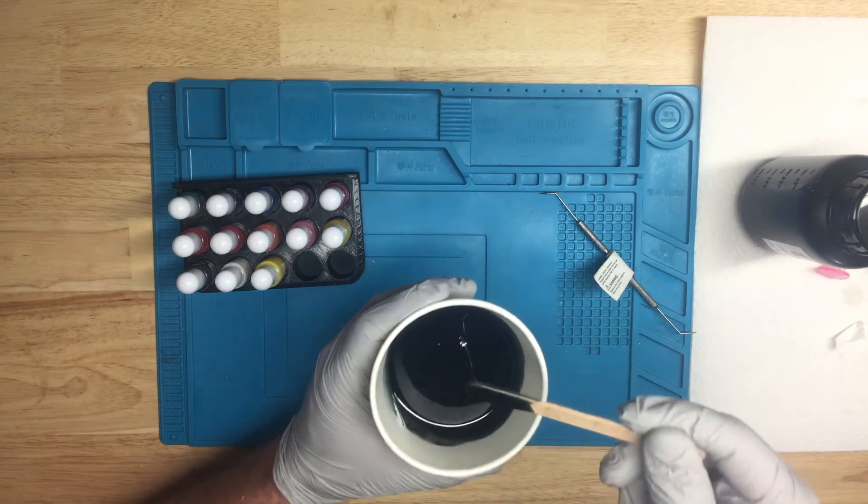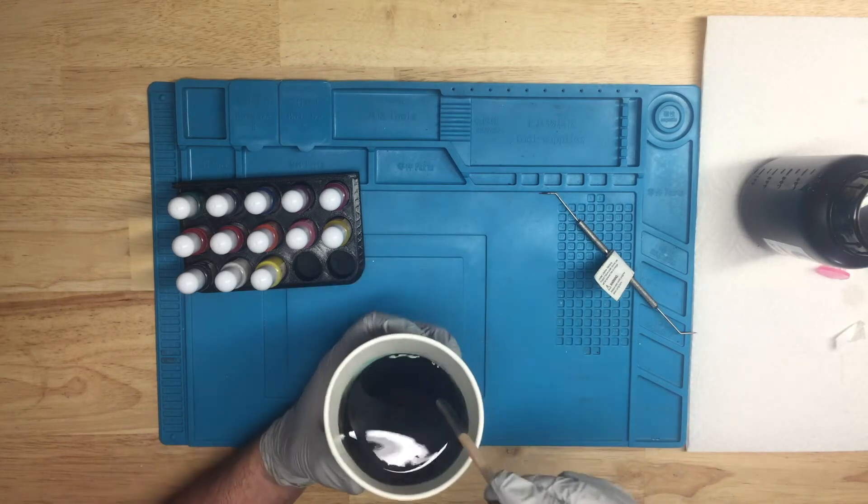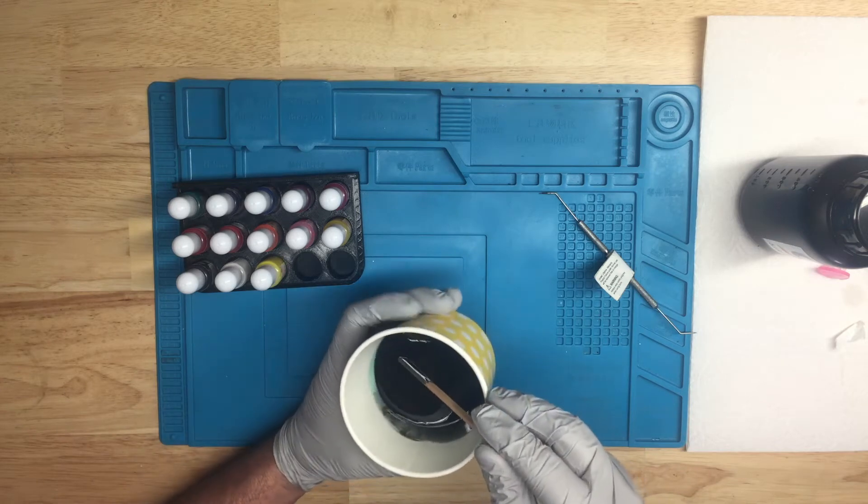Get a really good stir on this. Can't really tell on camera, but it has a tinge of green to it. Especially when it gets thin. You can kind of see it around the sides.